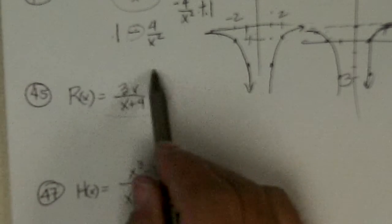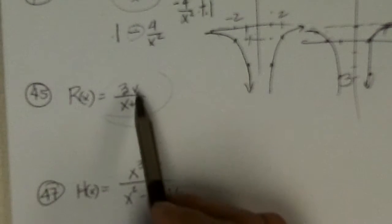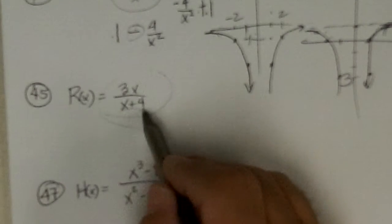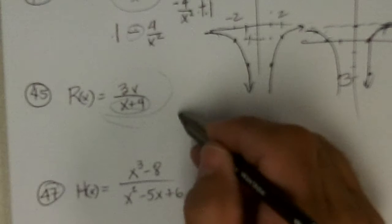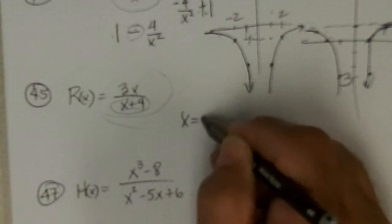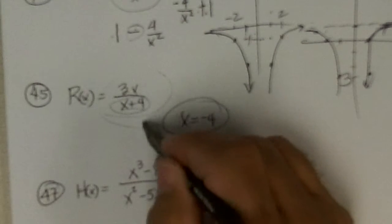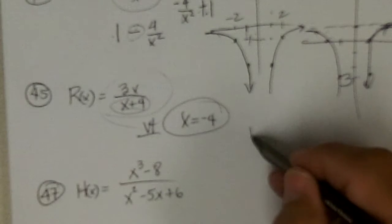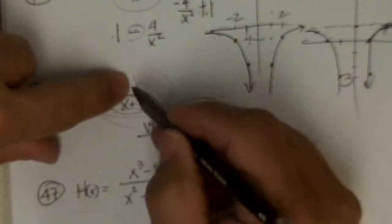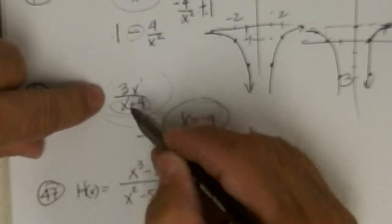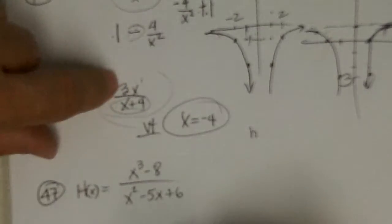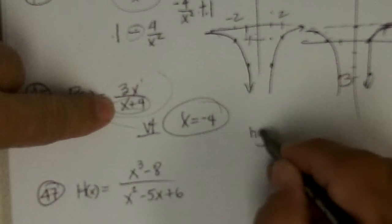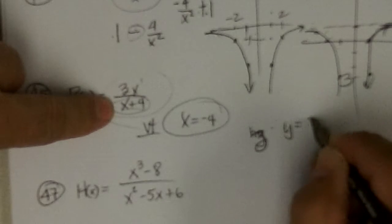Okay, now we're supposed to just find vertical and horizontal asymptotes. So is there any holes? No factors match, so no holes. So then anything that makes the denominator 0 is a vertical asymptote. And horizontal or oblique will depend on the degrees. And this has 1 and 1, and so it's the ratio of the coefficients. 3 to 1, which is y equals 3.